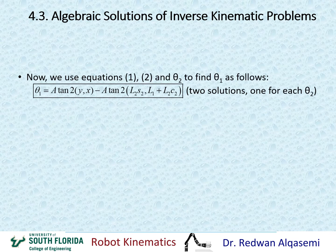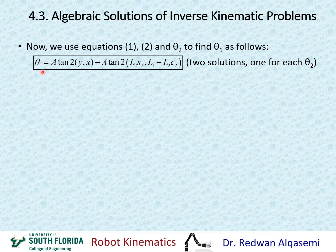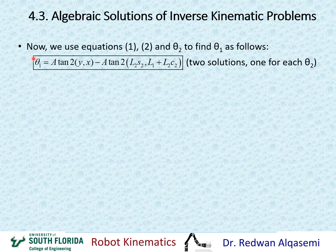Similarly, we can use equations two and three along with the values of theta2 to find theta1. The formula is atan2(Y, X) minus atan2(L2*S2, L1 + L2*C2). Since we have two values for theta2, we evaluate this equation twice — once with each theta2 solution — giving theta1 solution one and theta1 solution two.